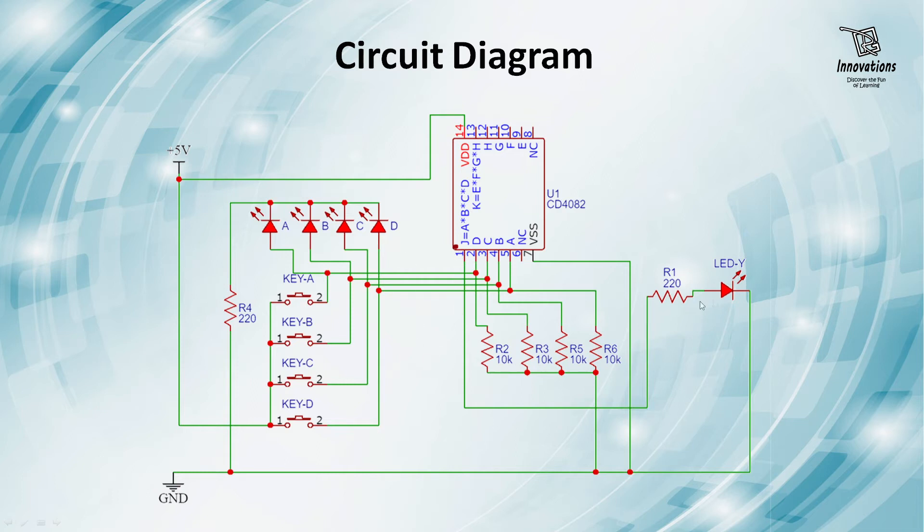And from pin number 1, we have connected an LED. This will show the output. When the output is high, the LED will glow. And when the output is low, the LED will not glow. Pin number 7 is connected to negative and pin number 14 is connected to positive power supply. And we have used up resistances here to limit the current to the input LEDs and resistance here to limit the current with the output LED.